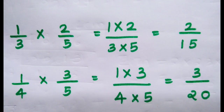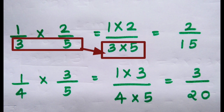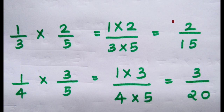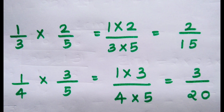Multiplying two fractions: 1/3 multiplied by 2/5. Multiply the numerator 1 and 2, and the denominator 3 and 5. Multiplying the numerators 1 and 2 we get 2, and 3 and 5 gives 15. So the answer we get is 2/15.